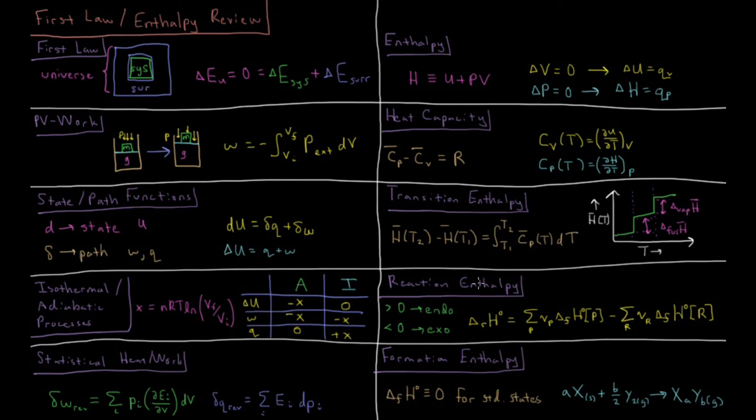We can define enthalpy for a chemical reaction. If the enthalpy of a reaction is greater than zero, then it is endothermic. If the enthalpy of a reaction is less than zero, it is exothermic. Endothermic reactions absorb heat from the surroundings. Exothermic reactions release heat to the surroundings.